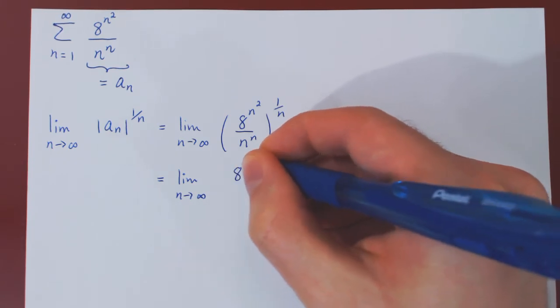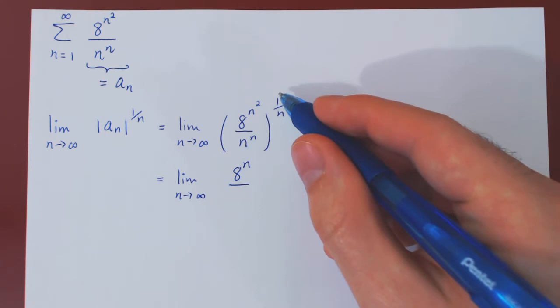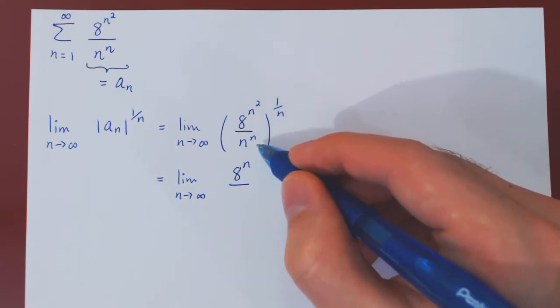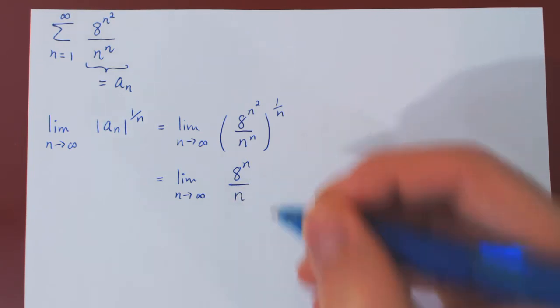So we're left with 8 to the n over n to the n raised to the power of 1 over n. Multiplying the exponents, n times 1 over n is 1, and we're left with n.